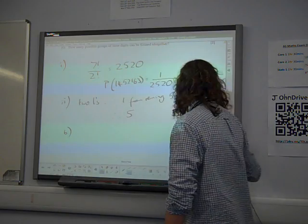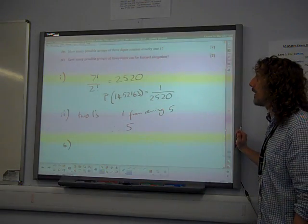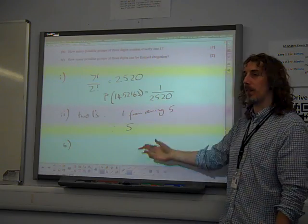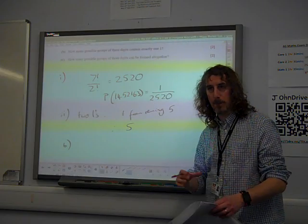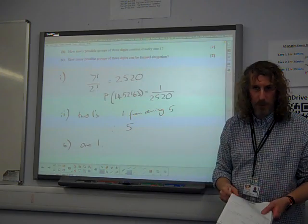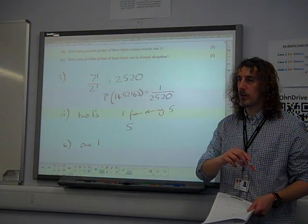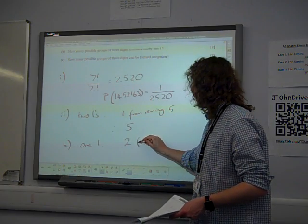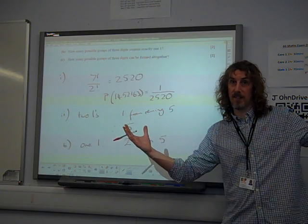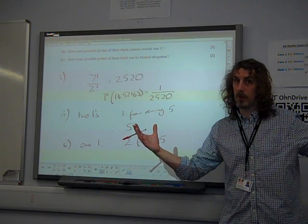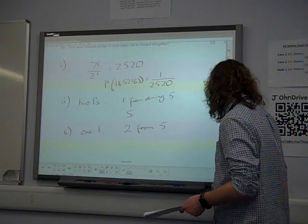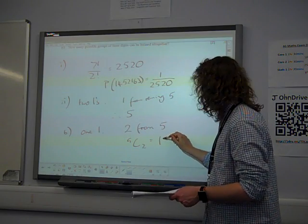Part B now says, how many possible groups of three digits contain exactly one one? Well, if we've done this one this way, keep keeping it simple. OK, so one one... One one is going to mean that we've got one of the ones that's already chosen. We're choosing two remaining digits from the remaining five. There are still five digits left because we're rejecting one of the other ones. So one one has been chosen. There are the five non-ones of which we need to choose two. How do you choose two from five?